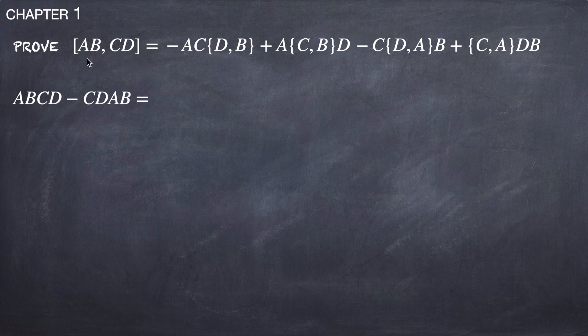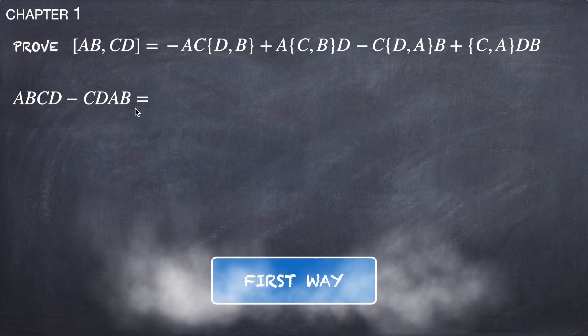So the commutator on the left hand side of this equation is obviously ABCD minus CDAB, and we can solve this problem in two ways.